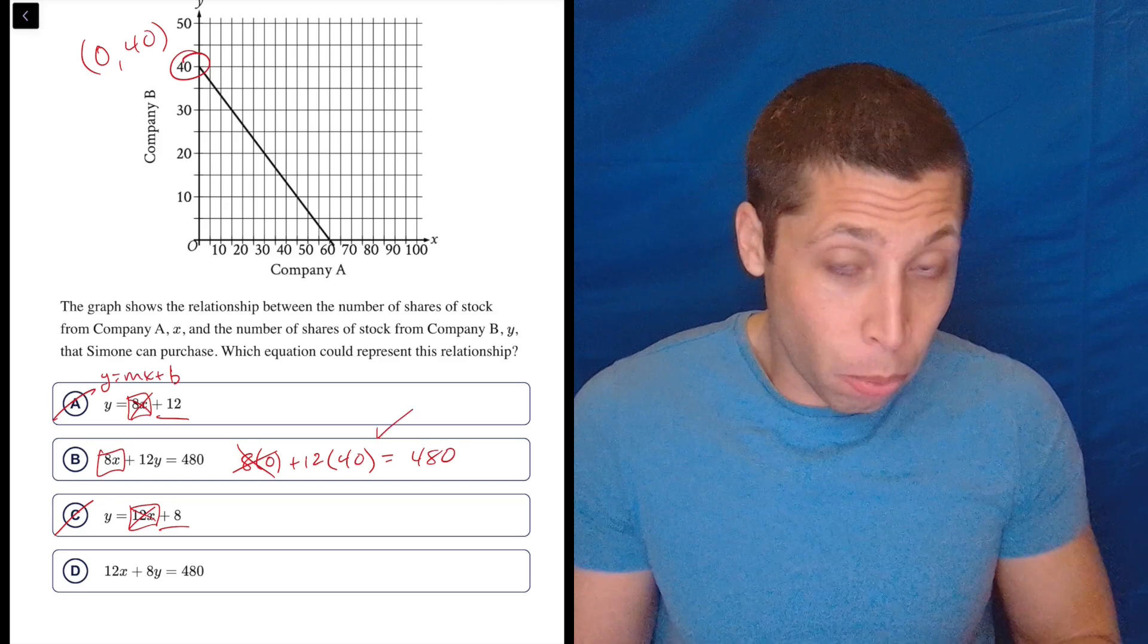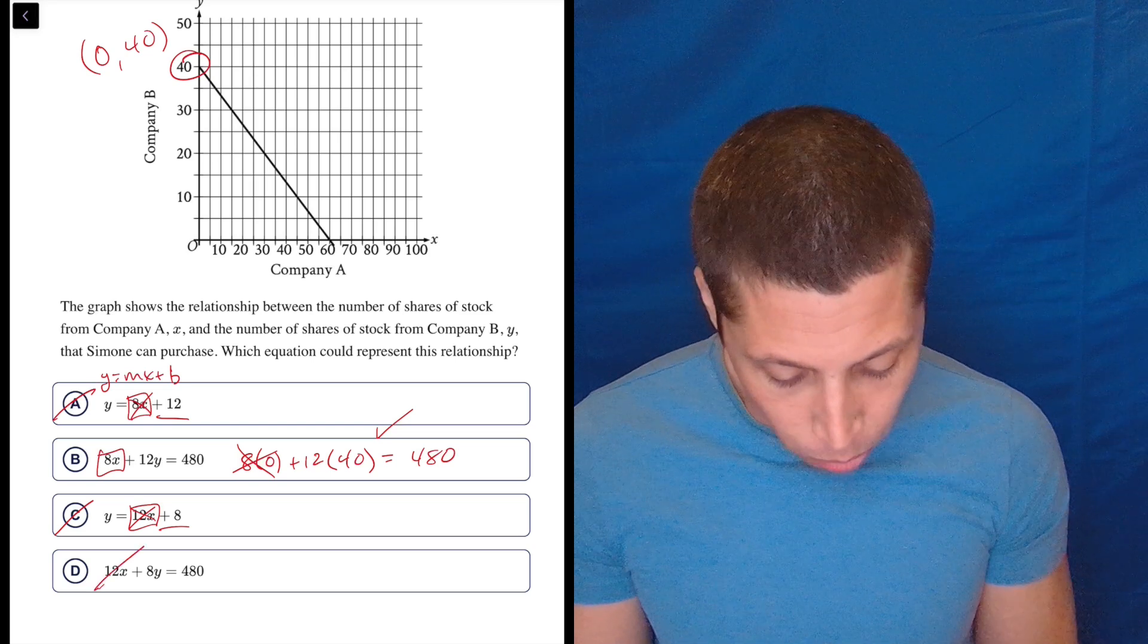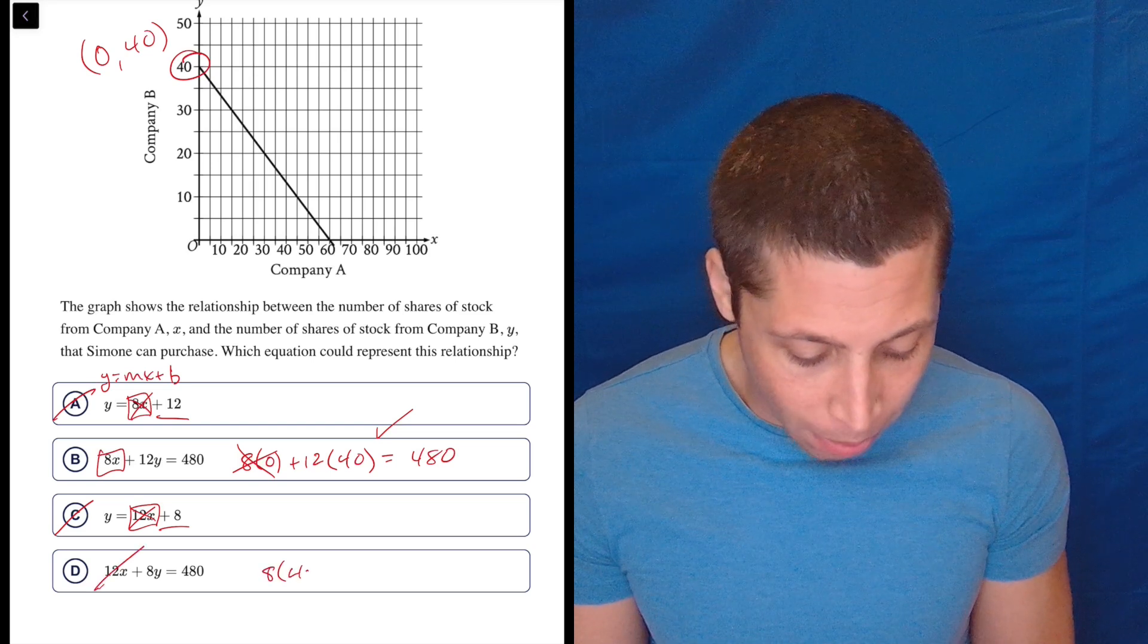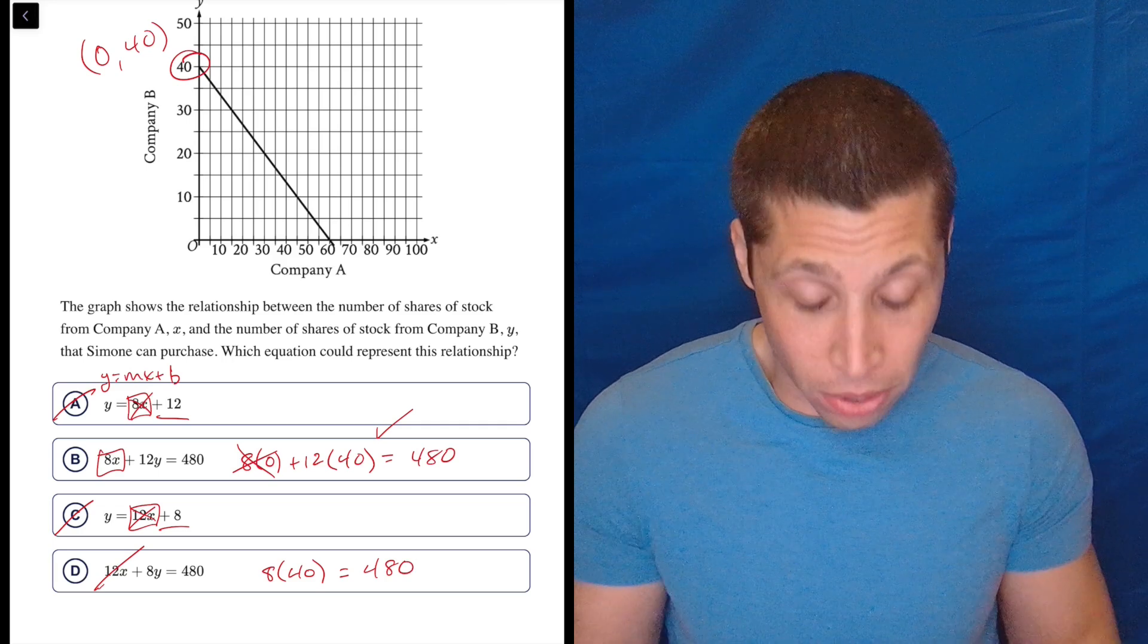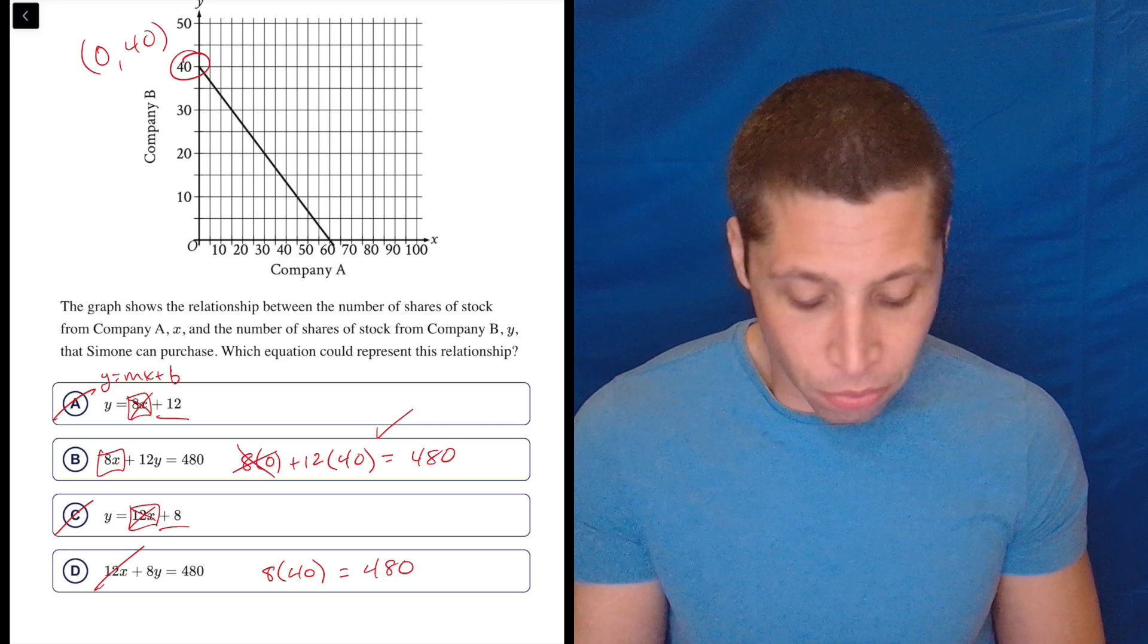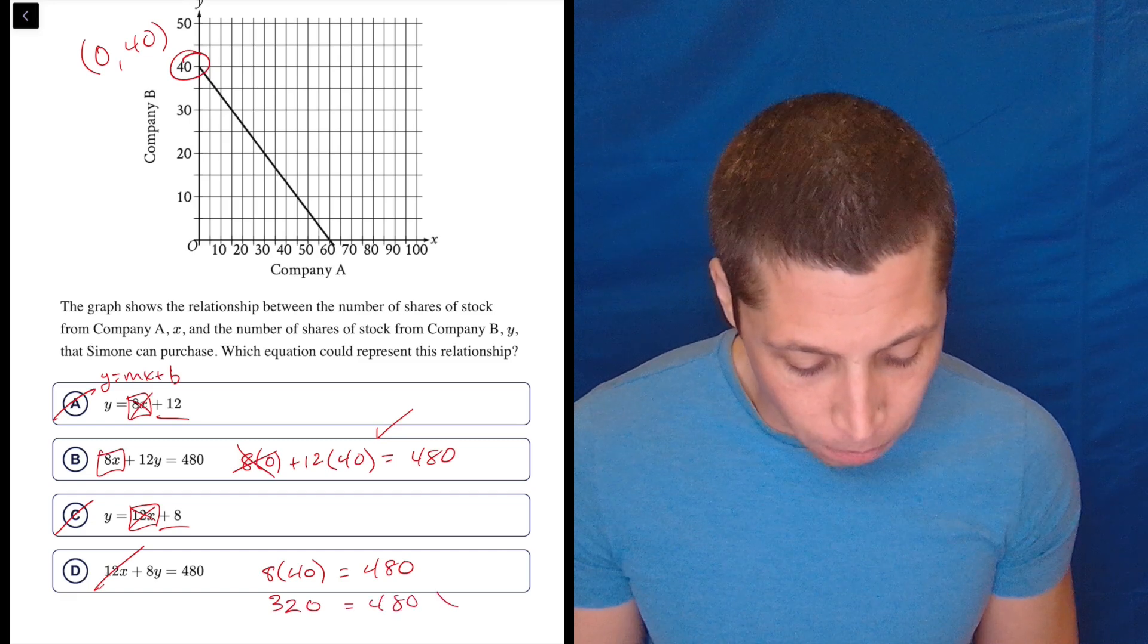And maybe this point works in two equations, but plugging in 0 for X is going to kill off the 12X. And we now know 8 times 40 definitely can't be 480 because it's obviously two different numbers I'm multiplying. But 8 times 40 is 32 with a 0. So no, it doesn't work.